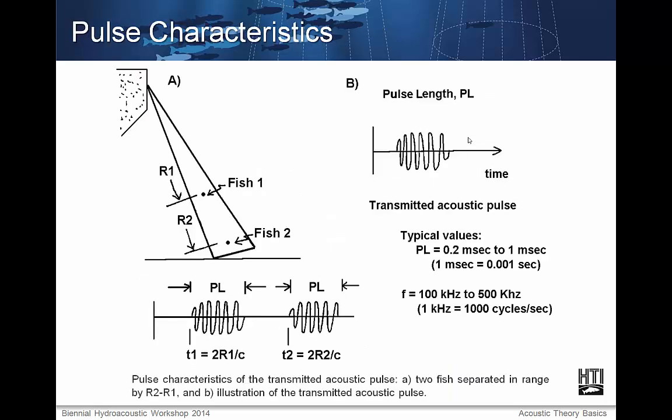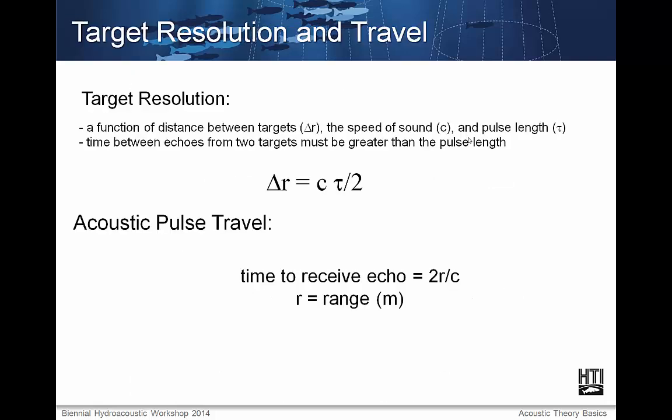The transmitted acoustic pulse has its own characteristics. Figure A shows an ideal situation for detecting fish. Figure B shows the signal originally transmitted by the transducer — the signal has some pulse length. The return signal at the transducer shows the echo from fish 1 at a return time, and then the echo of the same pulse from fish 2 at a later time. As long as these pulses don't intersect, the two fish can be resolved. This is known as target resolution.